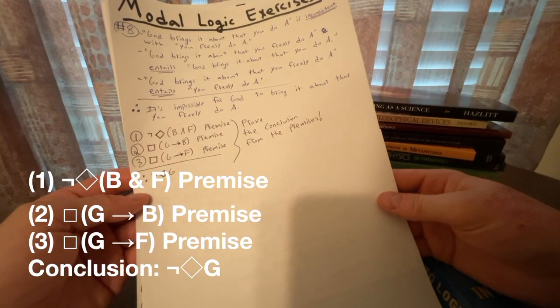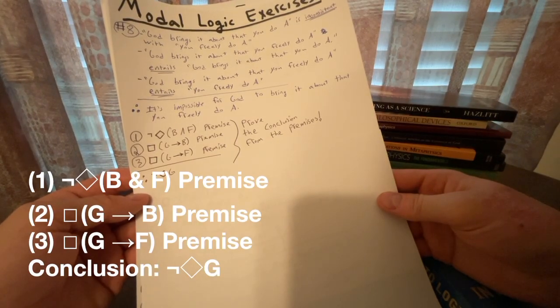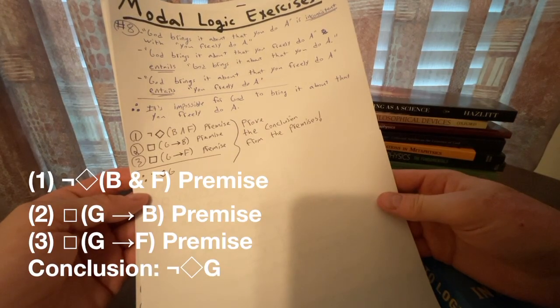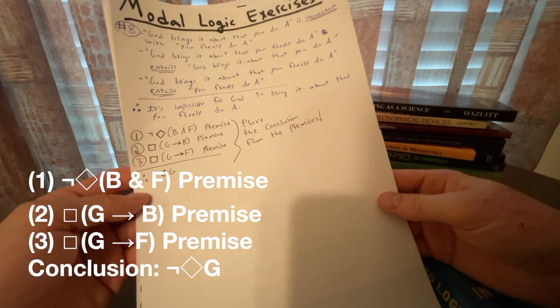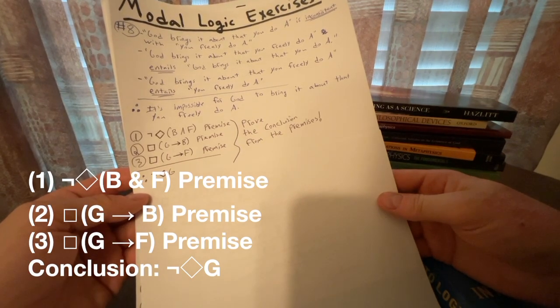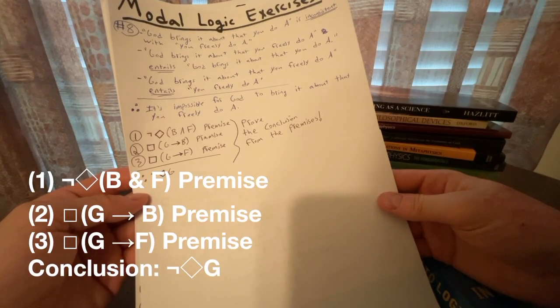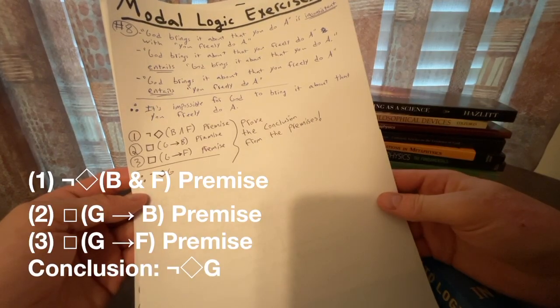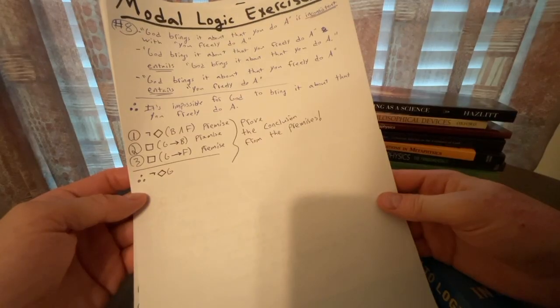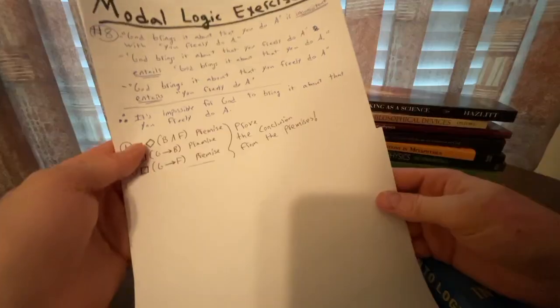Premise two is box parentheses G arrow B close parentheses. We have the conditional if G then B, where G stands for God brings it about that you freely do A, and B again stands for God brings it about that you do A. Premise three is box parentheses G arrow F close parentheses. In other words, it is necessary that if God brings it about that you freely do A, then you freely do A. And our conclusion is: therefore, not diamond G. In other words, it's impossible for God to bring it about that you freely do A. So now we're going to construct our proof using the tools of modal logic and propositional logic.